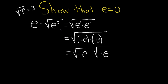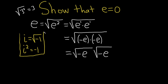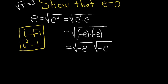For this next step, you might need some extra knowledge, so let me refresh your memory. i is equal to the square root of negative 1, and so i squared is equal to negative 1. We're going to use this in the problem now — it's super useful. Of course, we're showing that e equals 0, so there must be a mistake somewhere at some point.